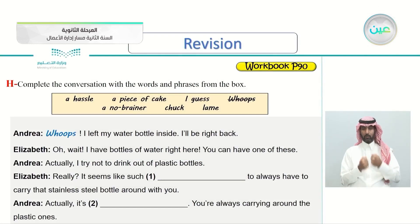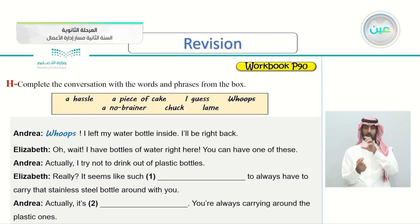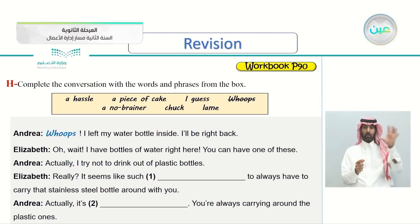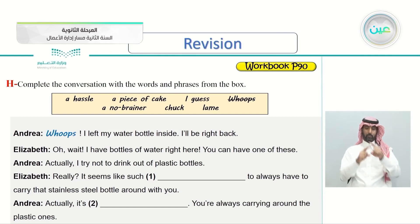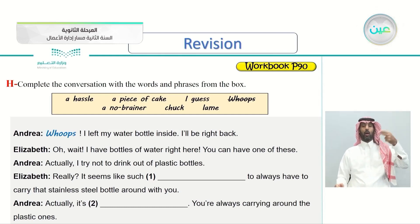Exercise H: complete the conversation with the words and phrases from the box. As you can see, we have a box with some words and we'll be filling the gaps with these words. The first word is 'a hassle,' then 'piece of cake,' 'I guess.'